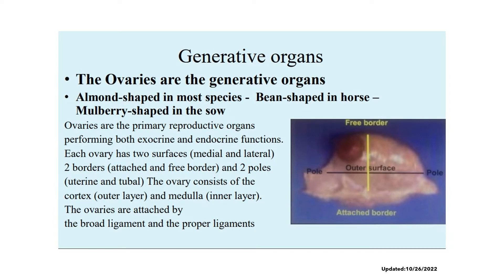The ovaries are the generative organs and are considered the primary reproductive organs of the female. In terms of shape, it is almond-shaped in most species such as the cow, bean-shaped in the horse, and mulberry-shaped in the sow. It has both exocrine and endocrine functions. The exocrine function is the production of gametes, and the endocrine function is the production of estrogen and progesterone. It has two surfaces — medial and lateral — two borders — the attached and free border — and two poles — the uterine and tubal. The ovary consists of the cortex on its outer part and the medulla on its inner layer, and is attached by the broad ligament and the proper ligament.